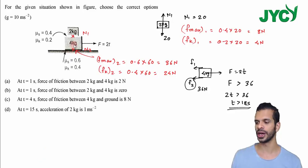And till 4 kg doesn't start moving, the 2 kg will be at rest, and the friction between them will be 0.